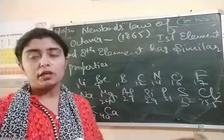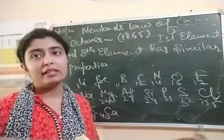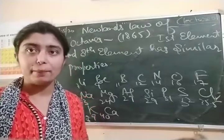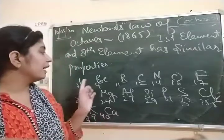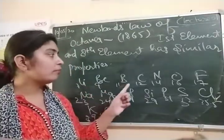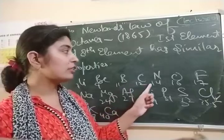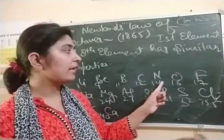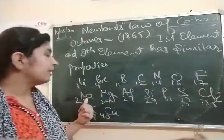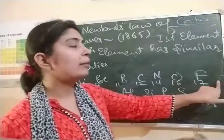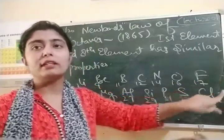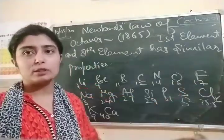According to Newlands, the first and eighth element must have similar properties. He explained his concept using the example of a musical scale. He arranged the elements like: lithium, beryllium, boron, carbon, nitrogen, oxygen, fluorine, and then sodium. After fluorine, we know neon comes, but at that time noble gases had not yet been explained.